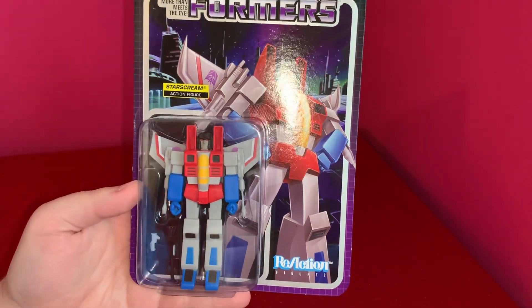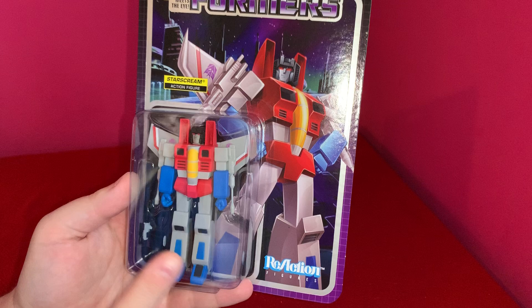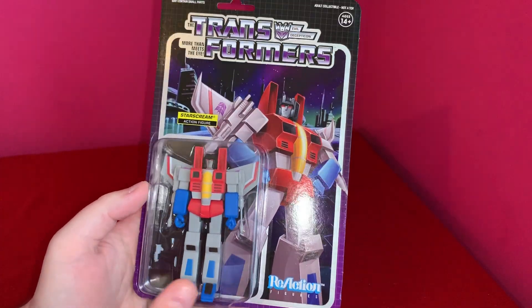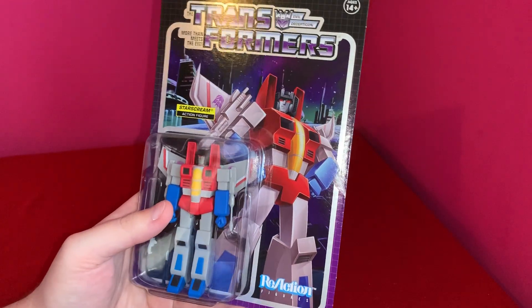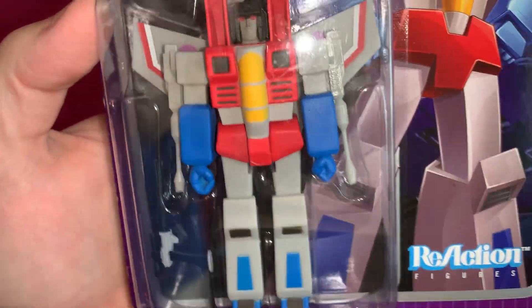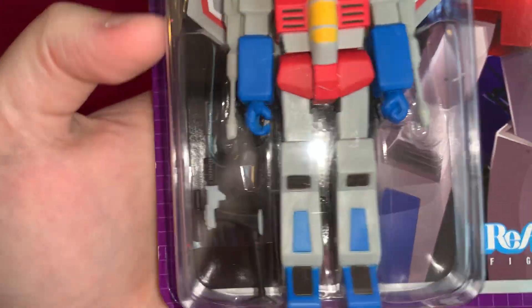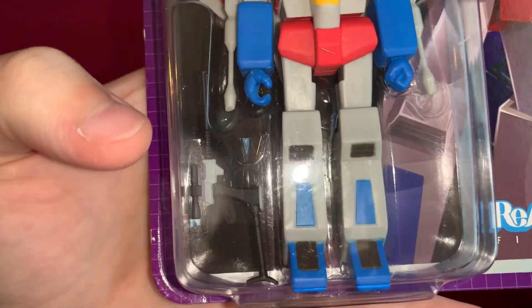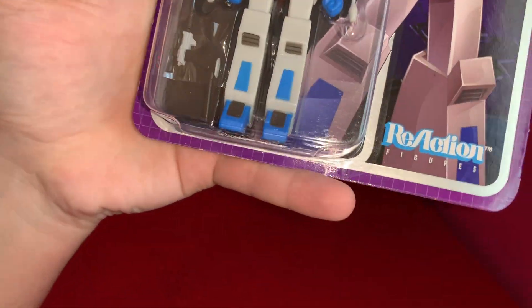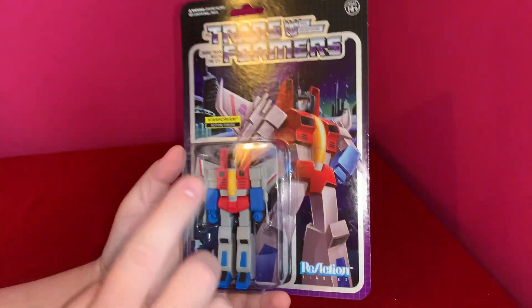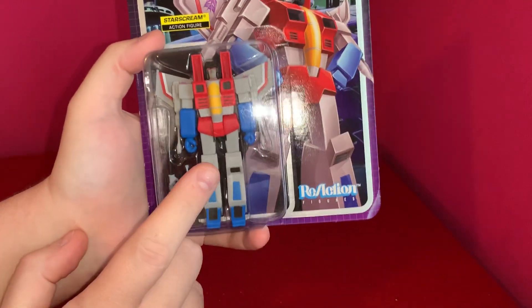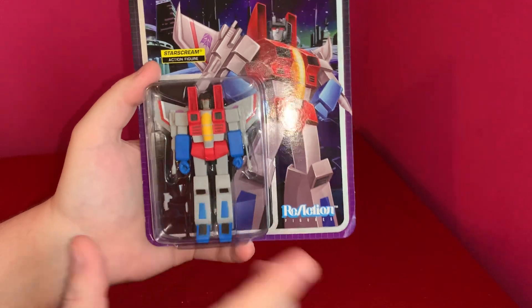If you've seen my previous videos on one of these I've done Optimus Prime and Megatron. With the Megatron figure I mentioned this figure and the accessory it comes with. So if we take a look there's Starscream but his accessory right there that's actually Megatron when he transformed in the original series. So in the original series Megatron would transform into a gun that would then be used by Starscream to shoot at the Autobots.